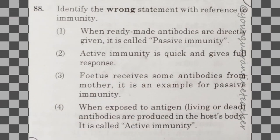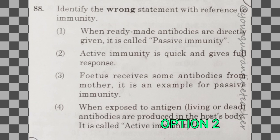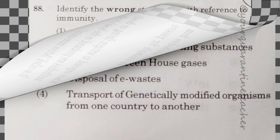88th question: identify the wrong statement with reference to immunity. The answer is option 2 — active immunity can give a full response — that is the wrong statement. Option 2 is the right answer.